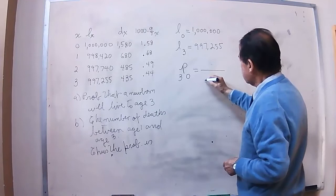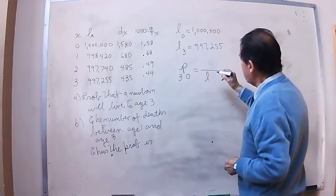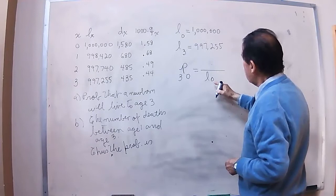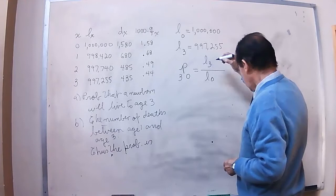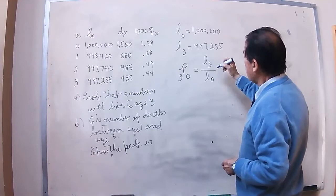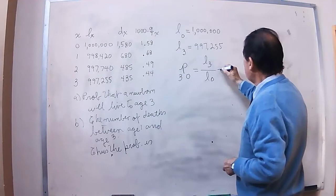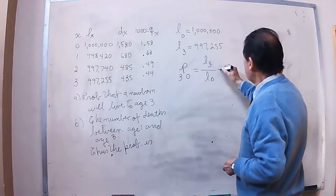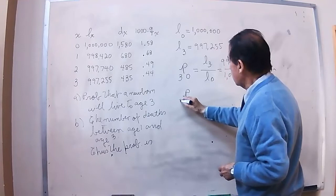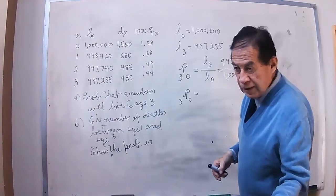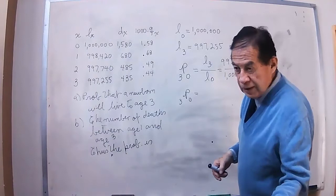The reference number will be the number of people which are newborns. And L3 will be the number of people of age 3. If we make a comparison of these two numbers, the division of these two numbers will give us the probability that the newborn will live until age 3.